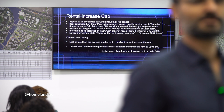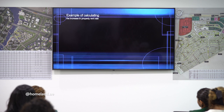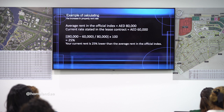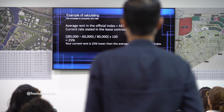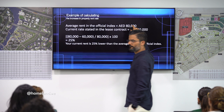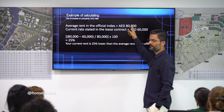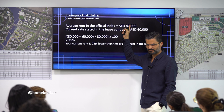If the landlord feels the rental index is not fair, they can apply for a rental valuation. To calculate the percentage: for example, average rent is 80,000 and the tenant is paying 60,000. The difference is 20,000; divide by the index (80,000) — that's 25%. Since the rent is 25% below the RERA index (which falls in the 21–30% band), the landlord can increase by 10%.